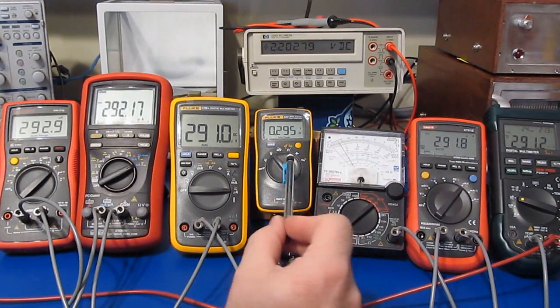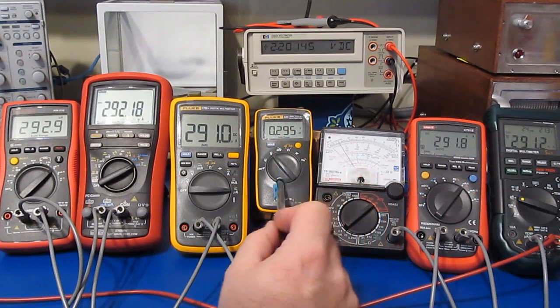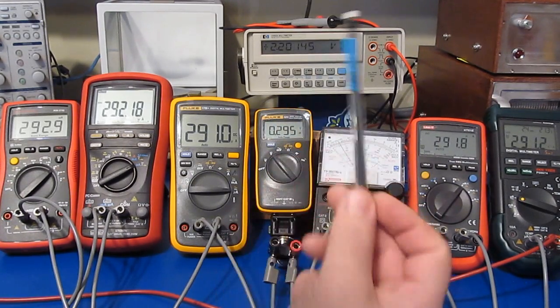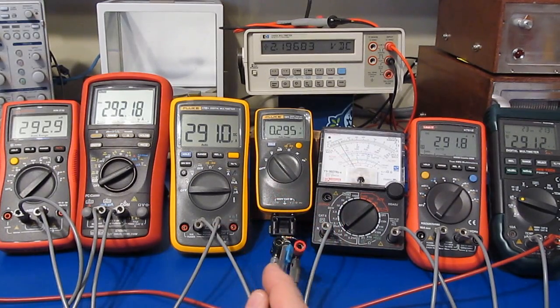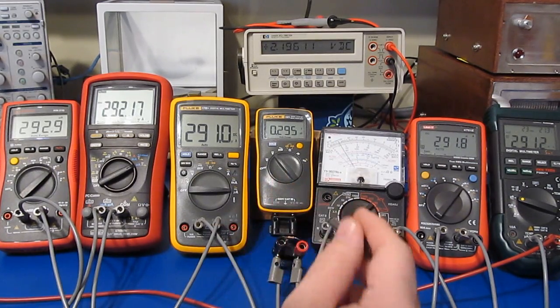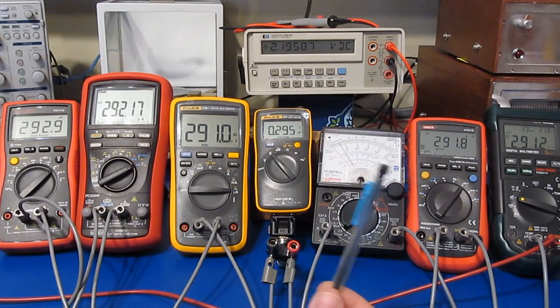I thought for the fun of it I would include the Fluke 101. One of the big complaints about this meter is of course it can't read current. I never quite understood that, but you can see I have a 1k ohm resistor in parallel with the input. And I'm using that for my shunt.